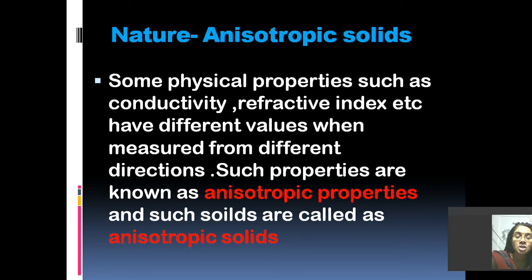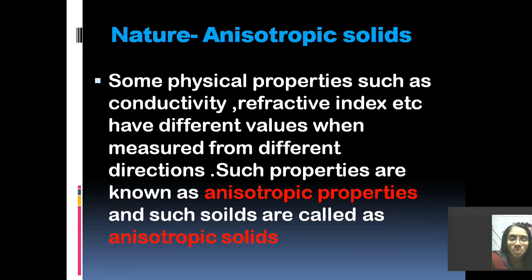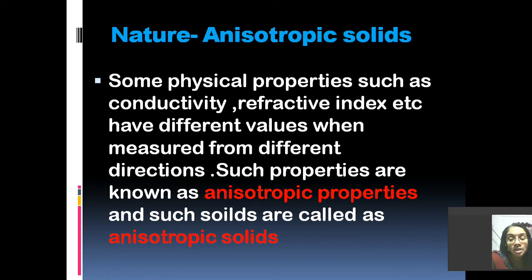Crystalline solids are anisotropic in nature, as I mentioned in the previous slide. Let me explain — but first you should know what anisotropic properties are. It has been noted that some physical properties like conductivity and refractive index, when measured in different directions, give different values — not in all solids, but in some. Such solids are known as anisotropic. Properties that change their values depending on the direction of measurement are known as anisotropic properties. Solids in which we get different values for these properties when measured in different directions are called anisotropic solids, and our crystalline solids are anisotropic.